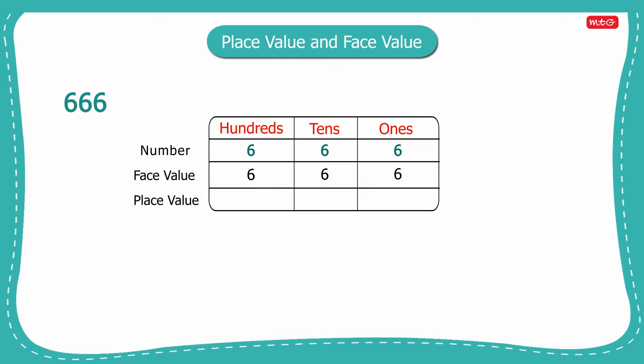But each digit 6 in the number 666 will have a different place value. The place value of the digit 6 at ones place is six ones or six. The place value at tens place is six tens or 60. And the place value at hundreds place is six hundreds or six hundred.